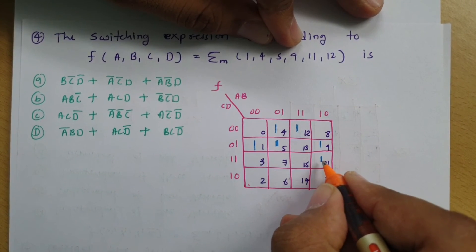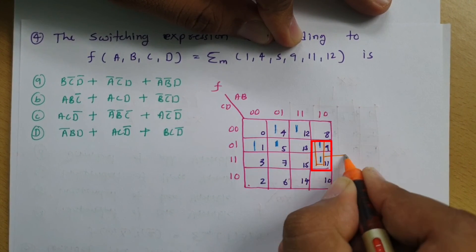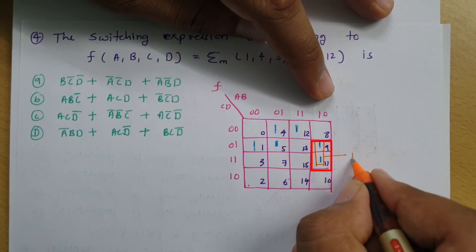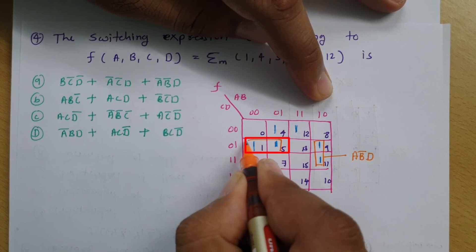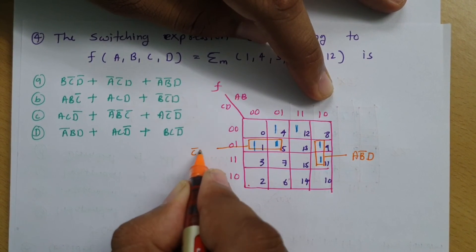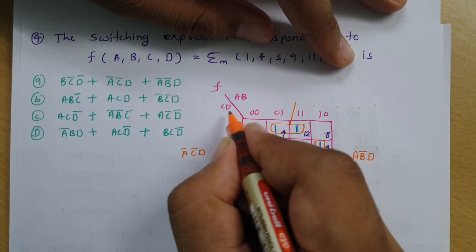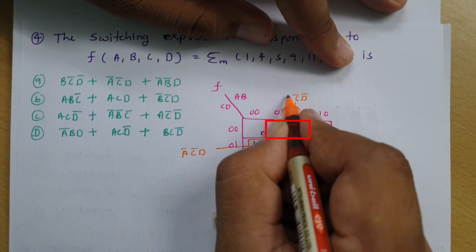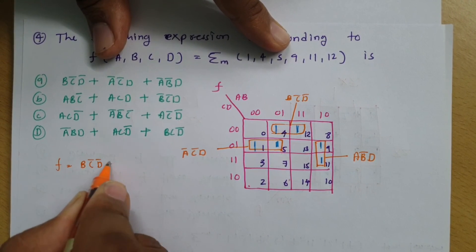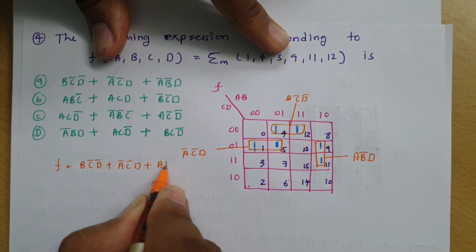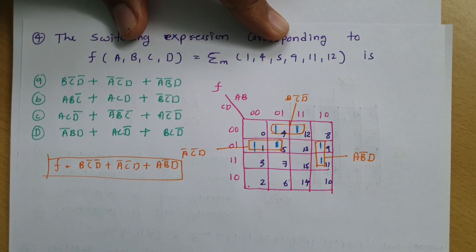Now I form the groupings. The first group that cannot be grouped elsewhere gives AB'D. The second group is A'C'D. The third group gives BC'D'. So the function f = BC'D' + A'C'D + AB'D. This is the Boolean expression for the given minterm summation.